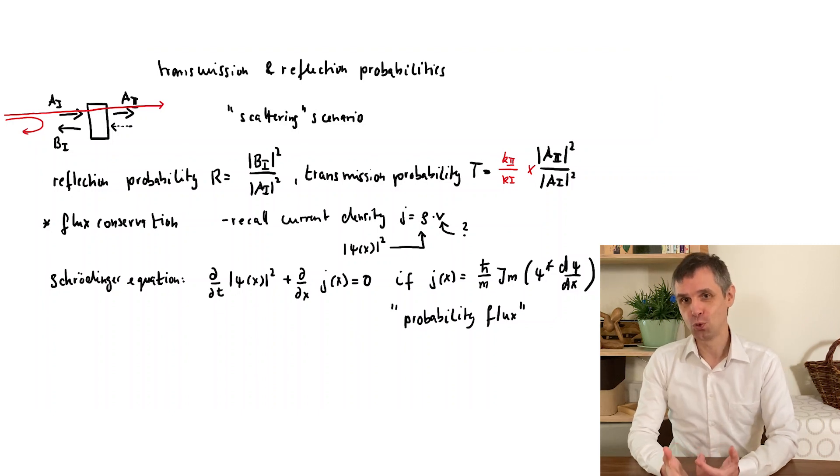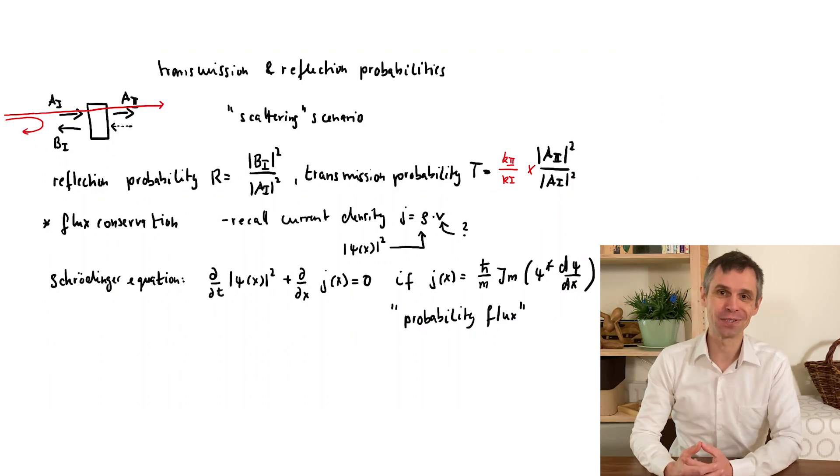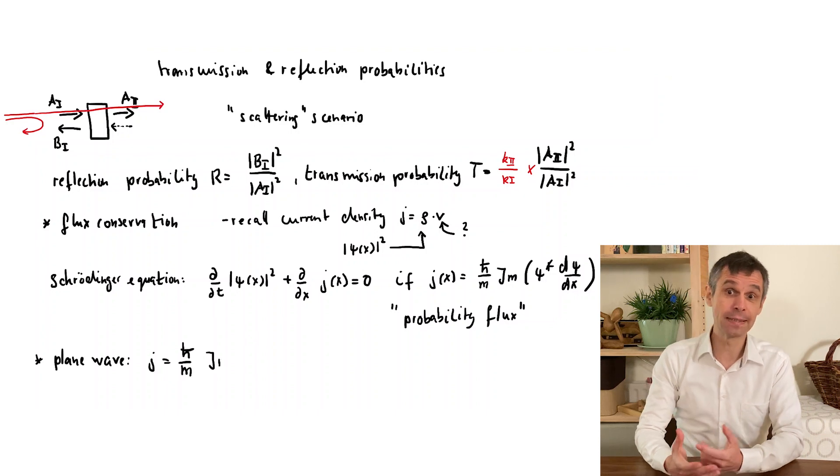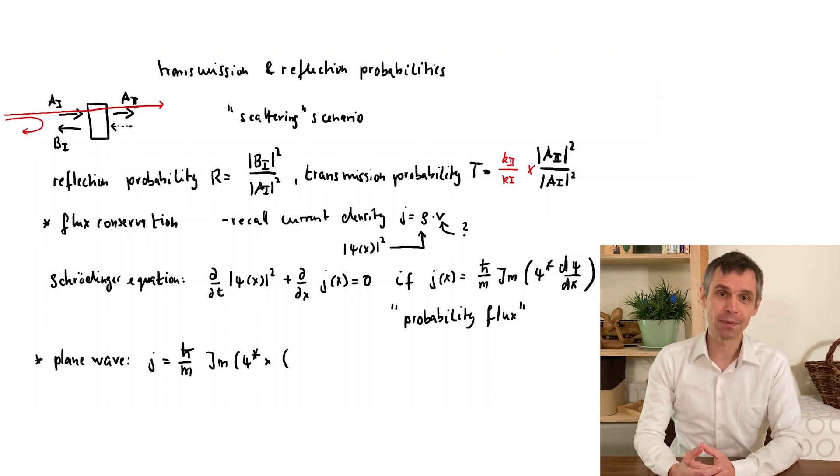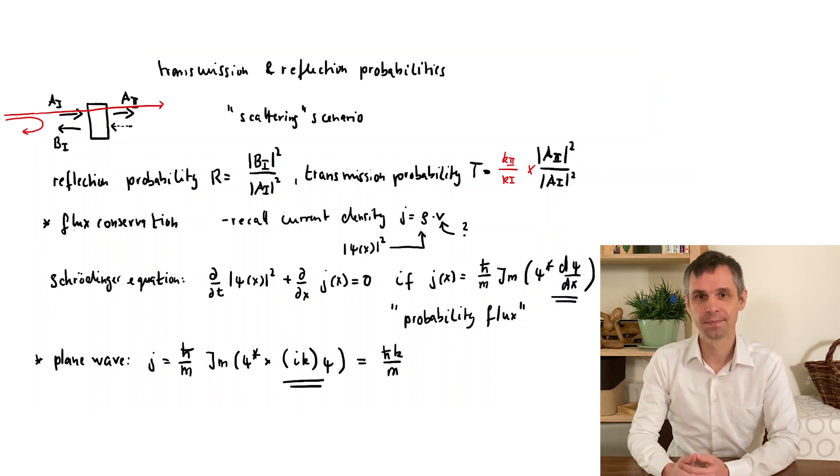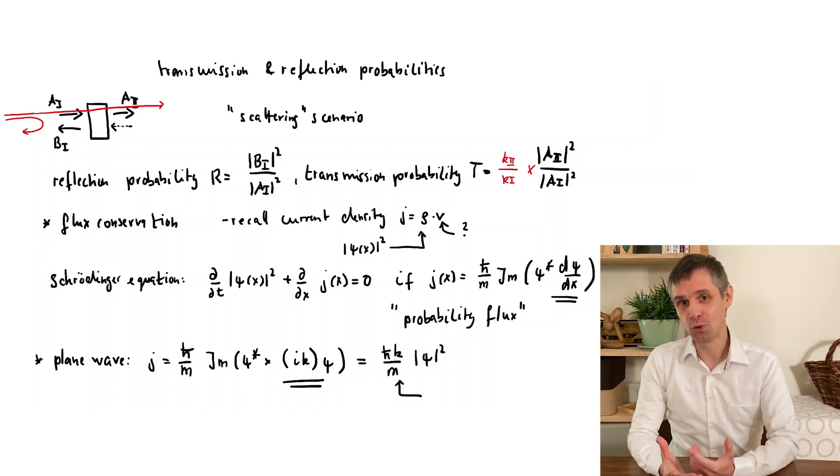But first, we use this to justify our expression for the transmission probability. If we simply evaluate this probability current for a plane wave, we find that it can be written as a probability density itself, multiplied by a factor that we can interpret as a velocity. And when we apply the de Broglie rule, this velocity actually just looks like the classical velocity.